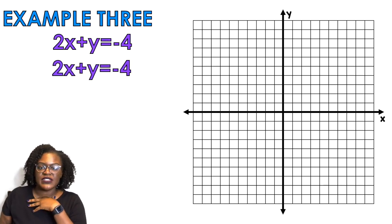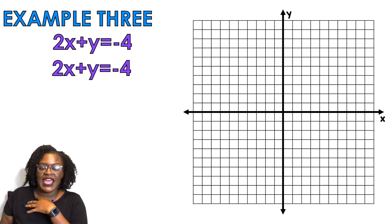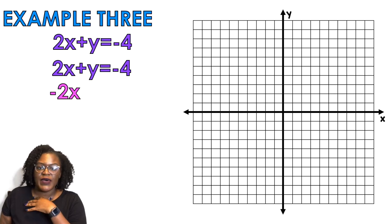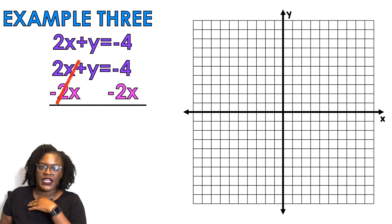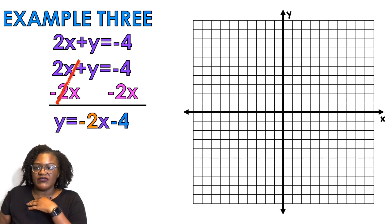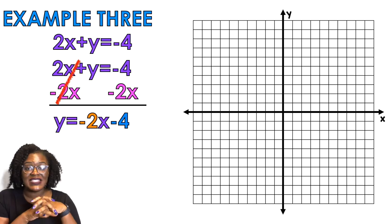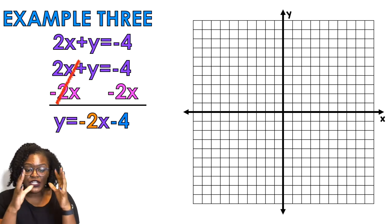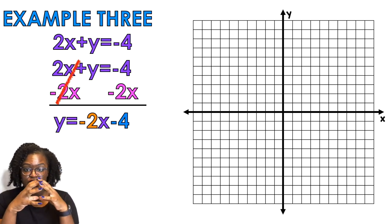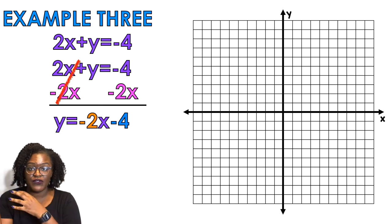So I have 2x + y = -4. I gotta get y by itself, so minus 2x, minus 2x. I'm gonna cancel out the negative 2x. y = -2x - 4. Remember when you're isolating y you want the slope first and then you want the constant the negative four after.